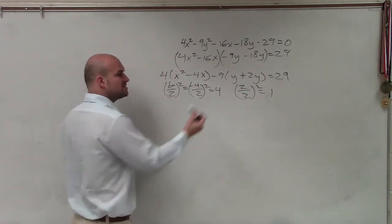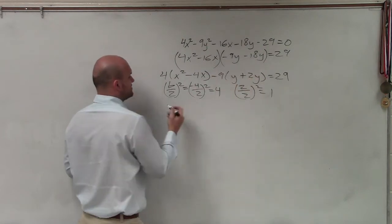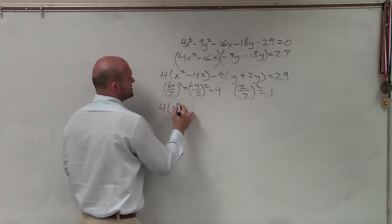So now, remember, what do we do with those numbers? We plug them into both of our parentheses to make our constant for our perfect square trinomial, as well as add them to the other side. But as I've mentioned before, the most common mistake that students make